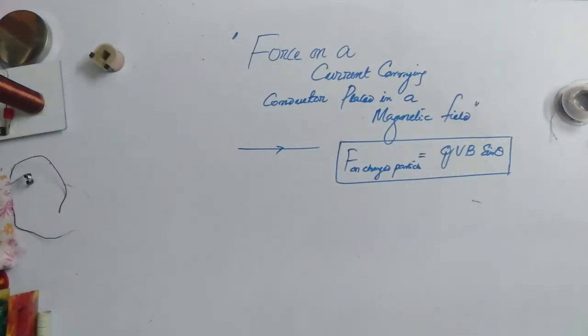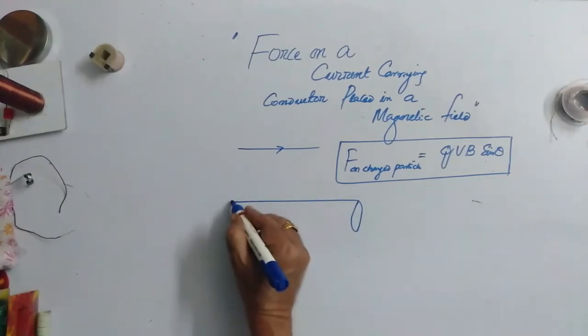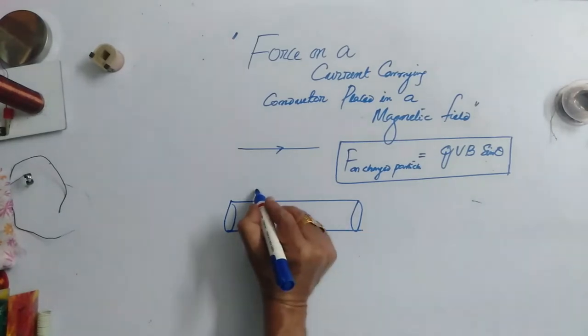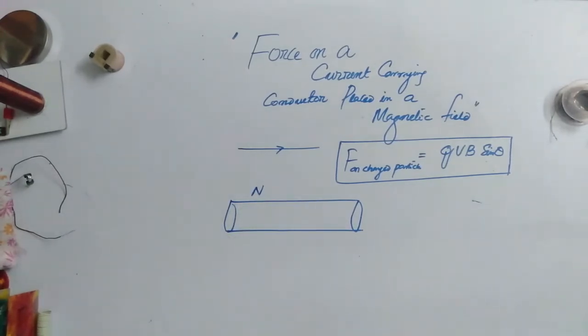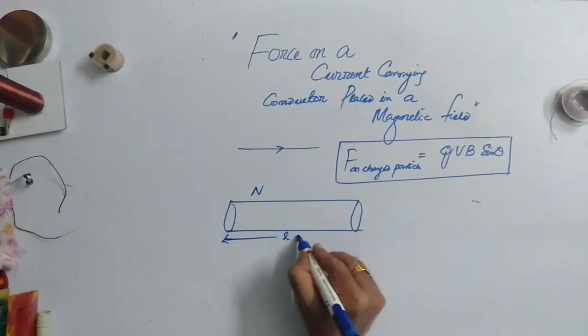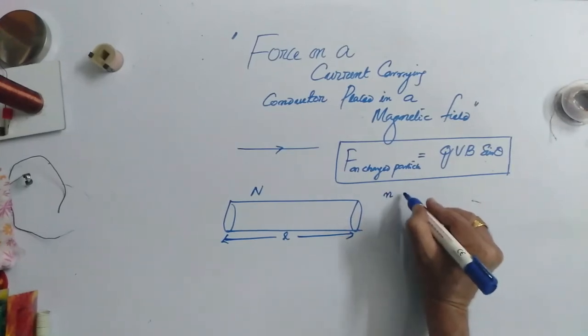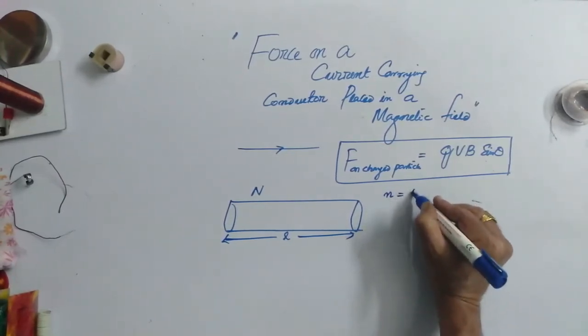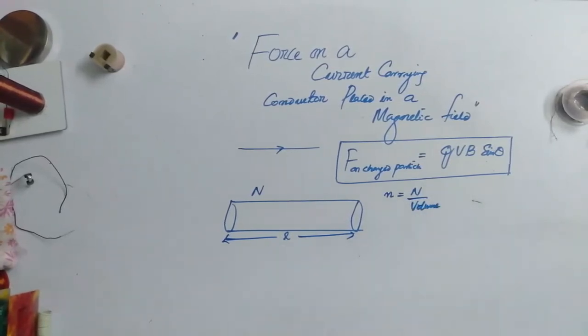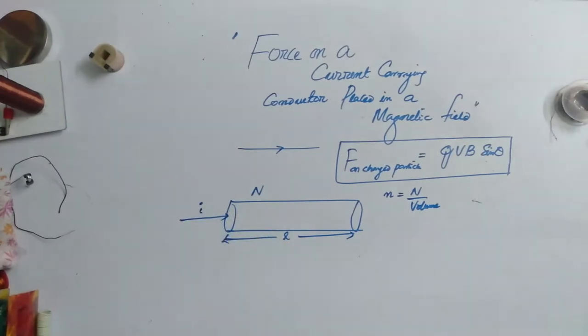Now for any conductor, suppose this is the conductor in which n number of charges are there, length of the conductor is L, and n represents the number of charged particles per unit volume. And current is passing through this one.